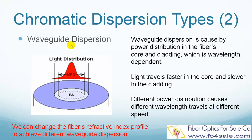To understand waveguide dispersion, we need to know that a light pulse travels partly in the core and partly in the cladding of the fiber. Light travels slower in the core and faster in the cladding. The overall speed depends on the proportion of power distributed in the core and cladding. However, the power distribution itself is a function of wavelength — the longer the wavelength, the more power in the cladding. So different colors of light travel at different speeds because of different power distribution in the core and cladding. This phenomenon is called waveguide dispersion.